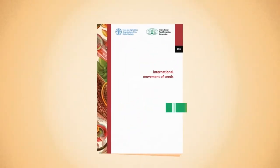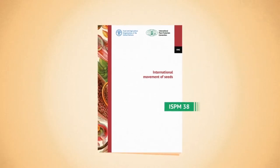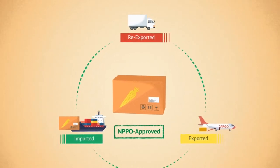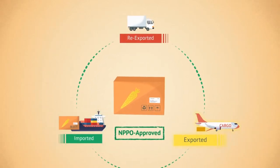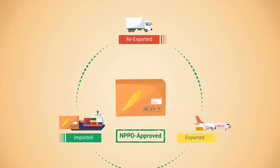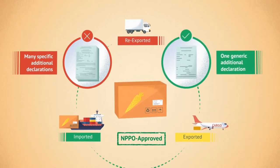Systems approach is recognized in the ISPN 38 governing the international movement of seed. In other words, a systems approach means that seeds produced in an NPPO-approved supply chain can be imported, exported, or re-exported to many countries with a phytosanitary certificate without the need for specific additional declarations for individual pests.